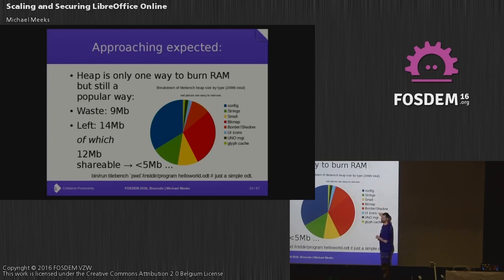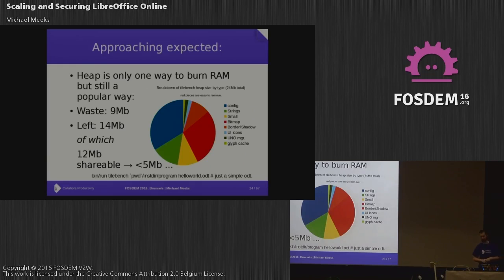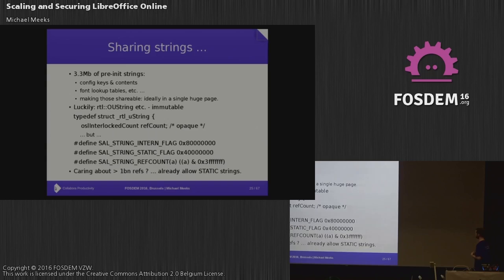We can share a whole load of strings and much of the configuration. Things like UI icons — why are we spending time loading UI icons? There's also the UNO service registries for internal components we can save. I think that with only a day of work or so, we can get this to under five megabytes per user, which is encouraging.